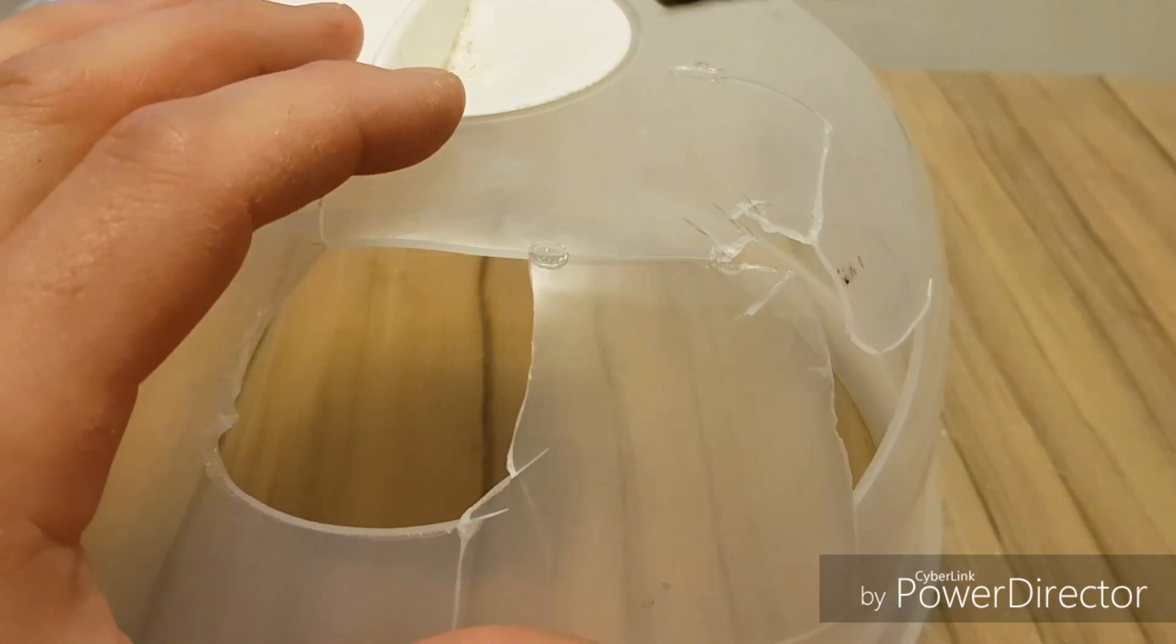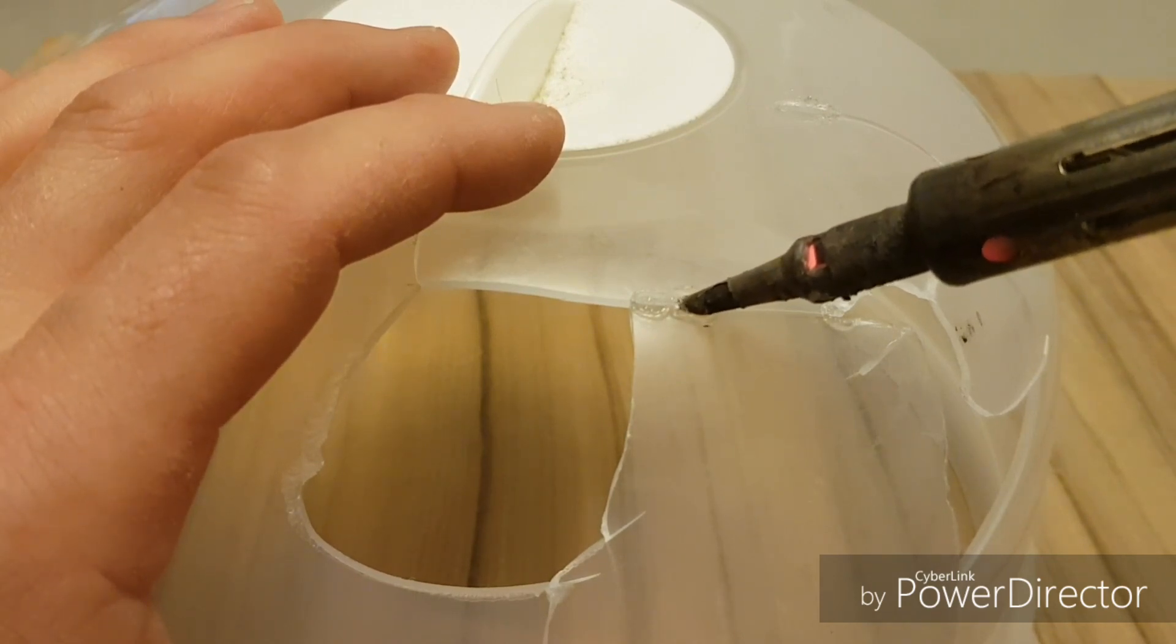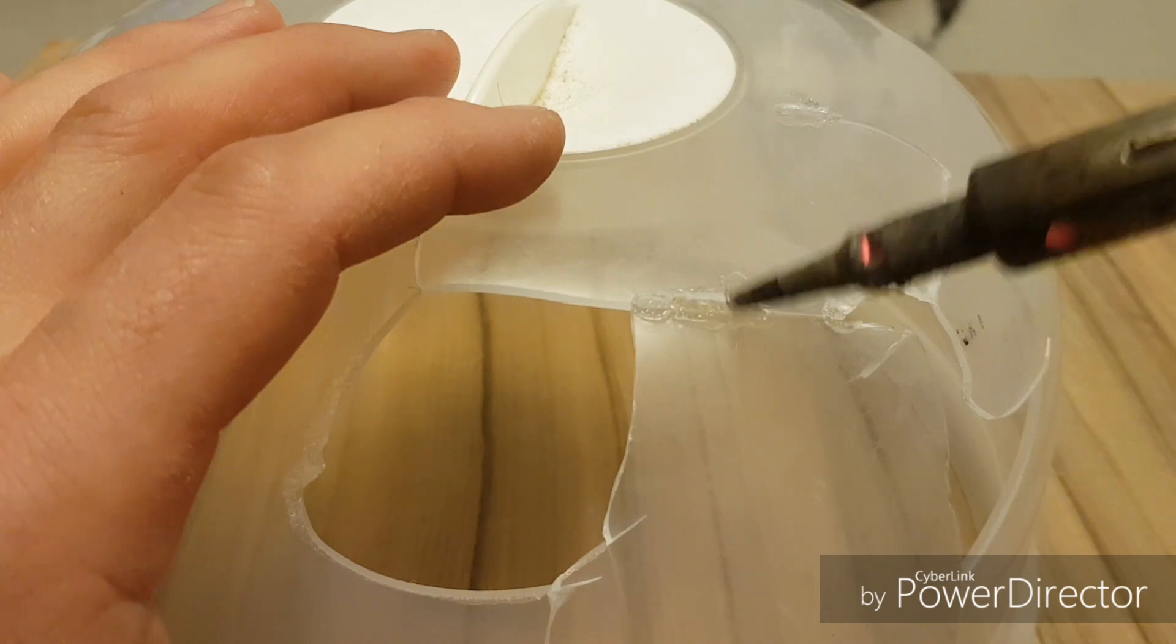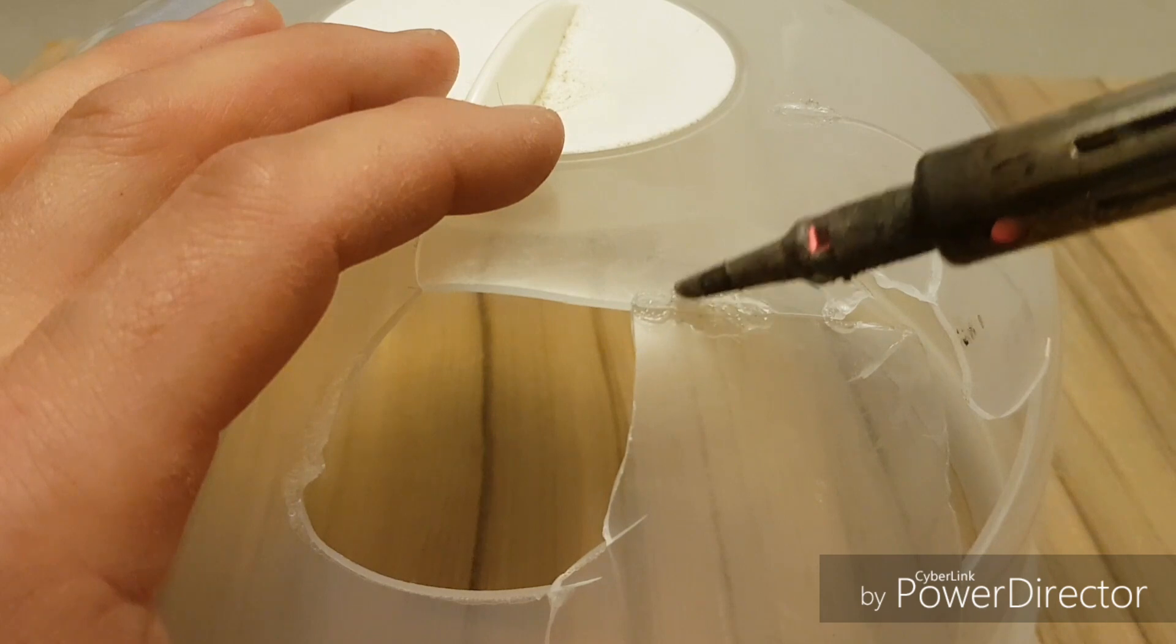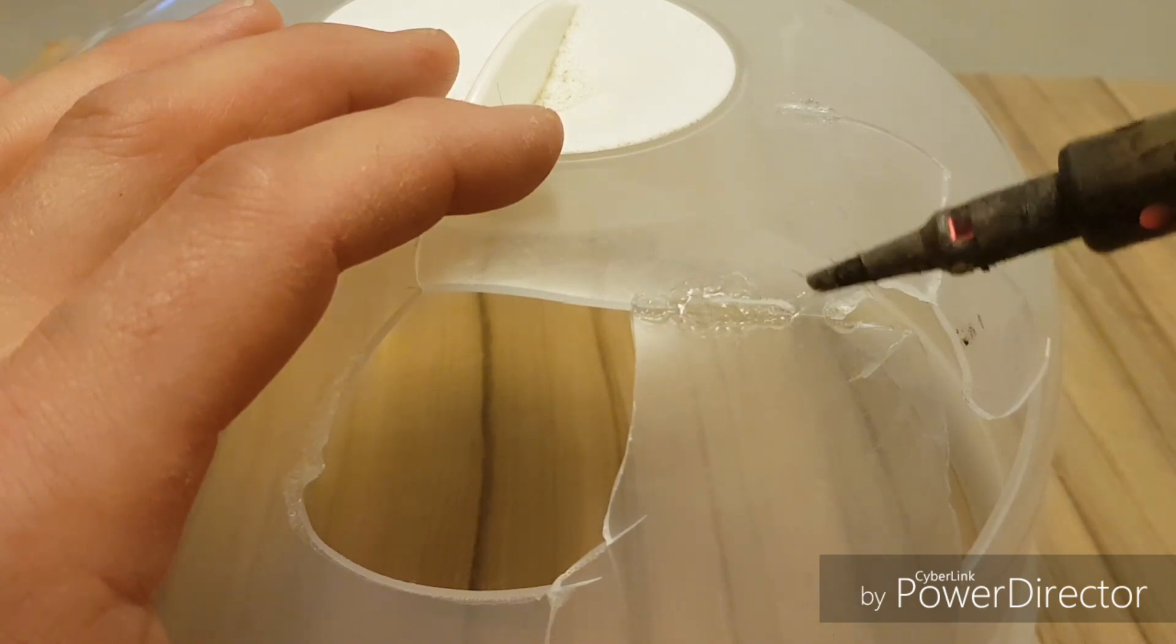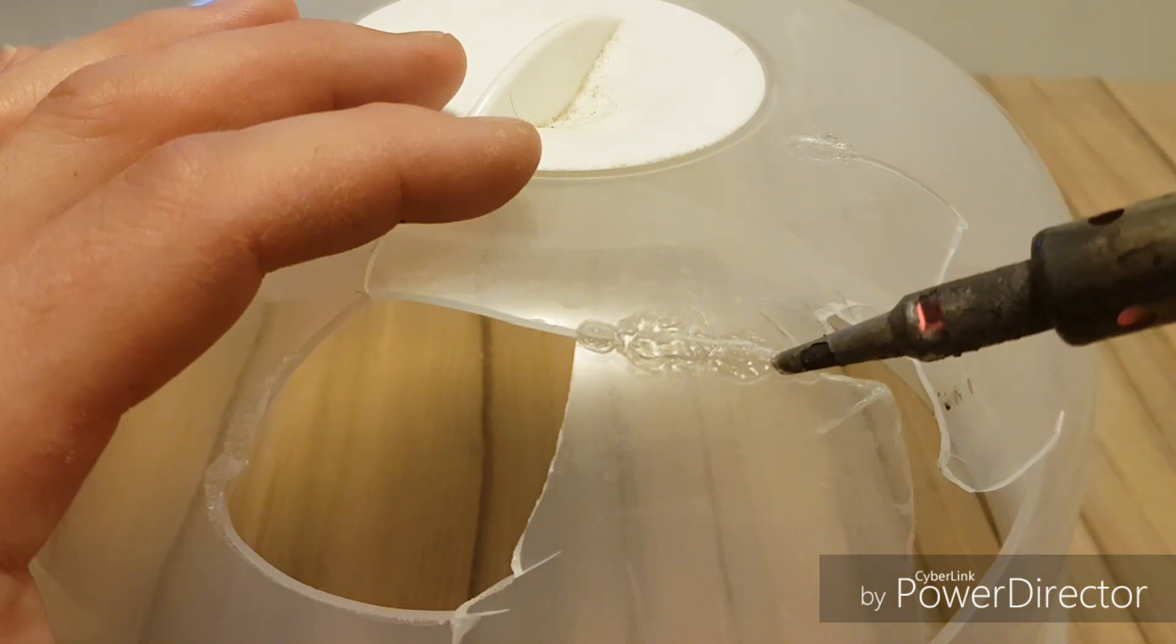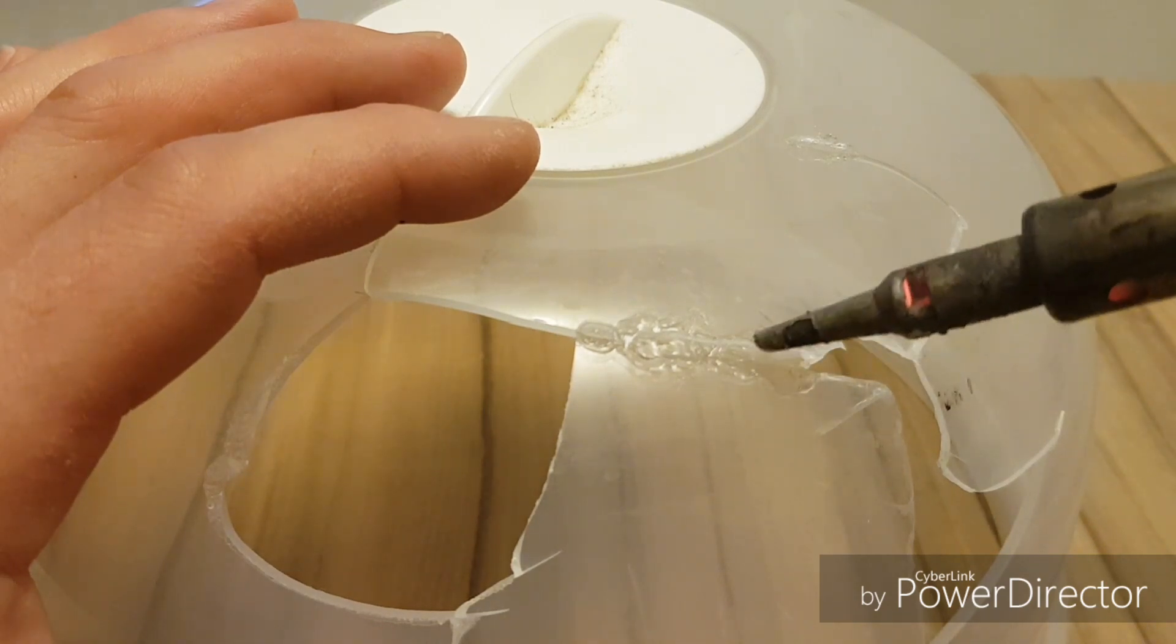Just give that a second to cool. Just hold that piece of plastic into place and what you want to do is you want to feed the soldering iron in and work backwards along the groove. You don't want to get the plastic so hot that it starts smoking up and melting.